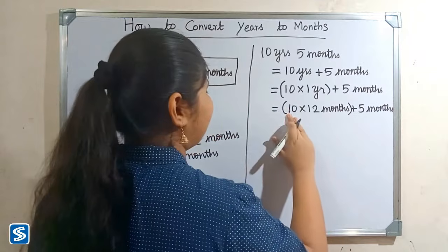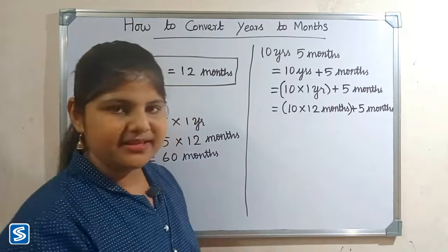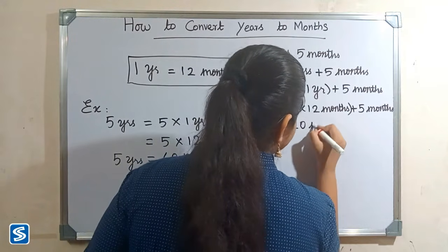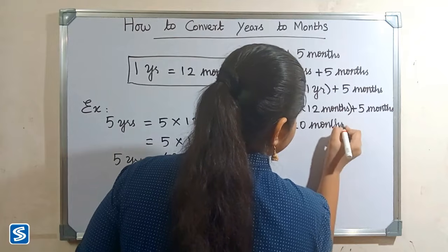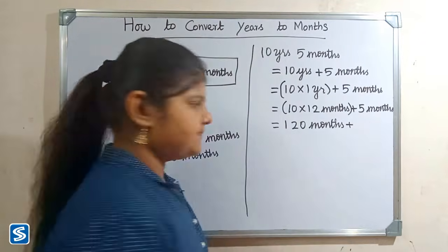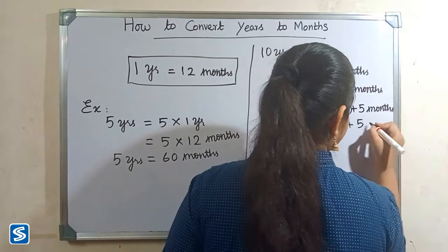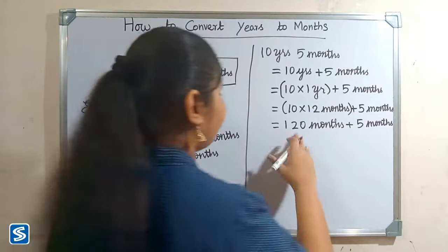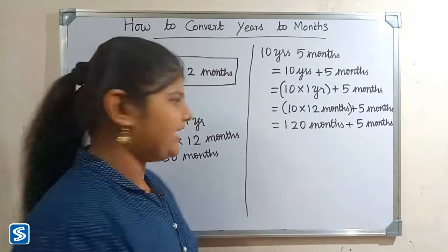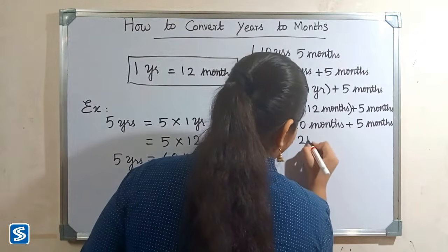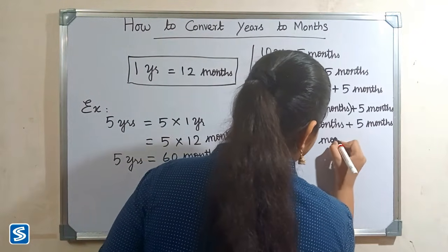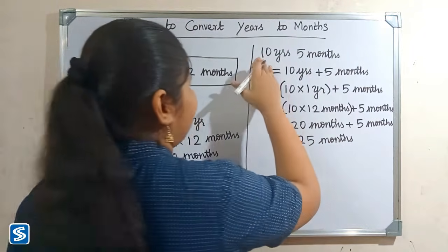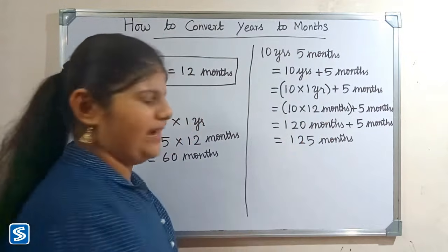Now we have to multiply 10 with 12 months, so 10 multiply 12 months will be 120 months plus 5 months. So 120 months plus 5 months will be 125 months. So 10 years 5 months will be 125 months.